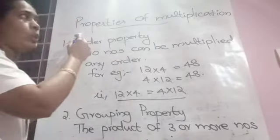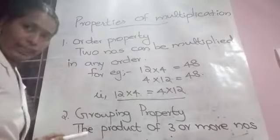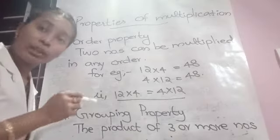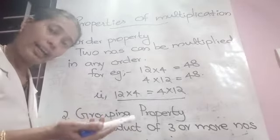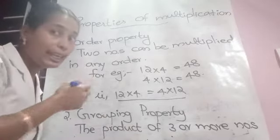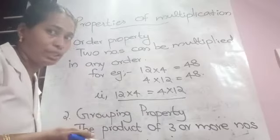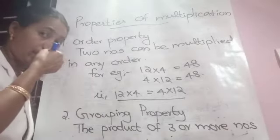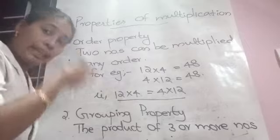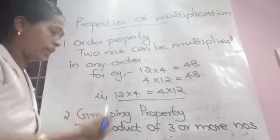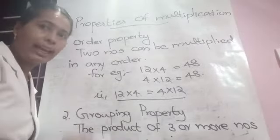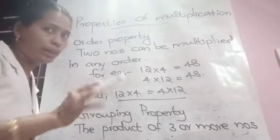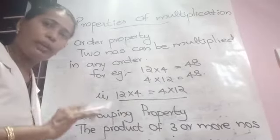Now we are moving to properties of multiplication. Properties are simple — you don't need to know the particular names yet. When you come to higher classes, you will study the names of the properties. But instead of formal names, they have given order property, grouping property, etc. Order property is otherwise known as commutative, but for now just study order property.